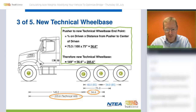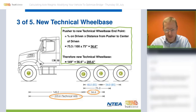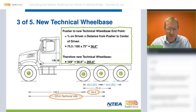That dimension of 56.6 inches is measured from the pusher to where the technical wheelbase will end — that's the new technical wheelbase endpoint. Once we have this dimension, we can add it to the 149 inches from the front axle to the pusher axle to get to the new technical wheelbase.